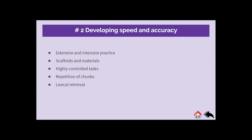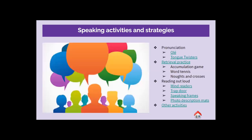The stage of developing speed and accuracy really relies on imitation and rehearsal, requiring practice through highly controlled tasks with access to scaffolding and materials — which is something the activities we're going to look at have in common. So how do we promote that fluency? How do we get students producing the language fast and accurately? I've put together a compilation of strategies including pronunciation games, retrieval practice, reading, and other games that I'm going to talk through.